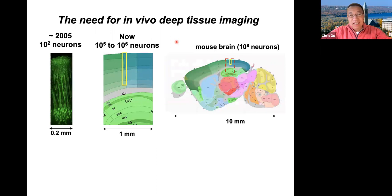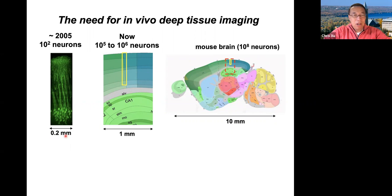First, the motivation: the need for deep tissue imaging. The sagittal plane of a mouse brain is about one cubic centimeter, one centimeter long, probably eight millimeters deep. The yellow box and the red box show how much we could image in about 2005 and currently. In 2005, we could only image a few hundred neurons, across a few hundred microns and about 500 microns deep. Now we can go much more — about a couple of millimeters deep and image maybe 100,000 neurons.